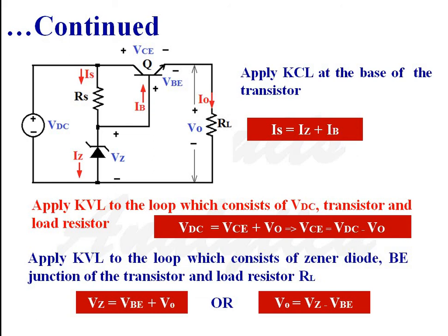Applying KVL to the loop which consists of the zener diode, the base-emitter junction of the transistor, and load resistance RL, we get: VZ = VBE + V0, or equivalently, V0 = VZ − VBE.